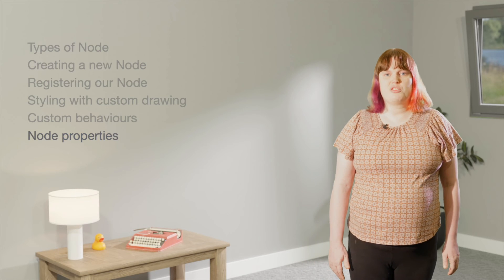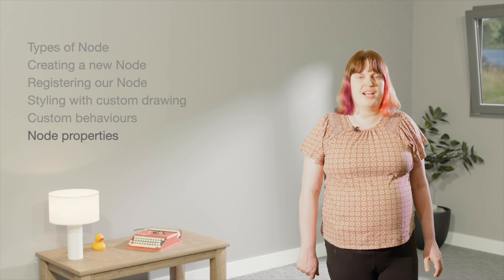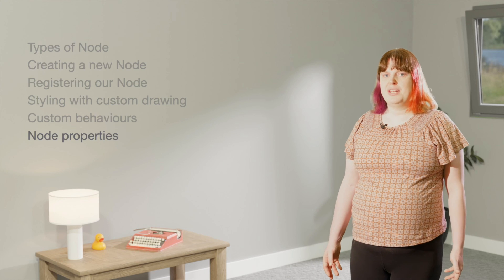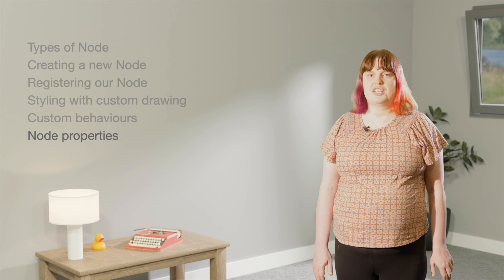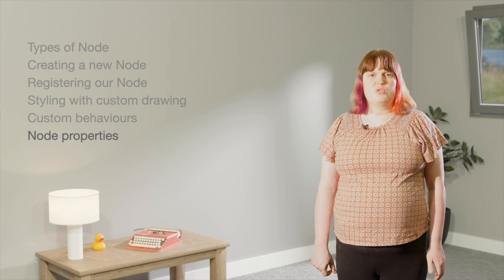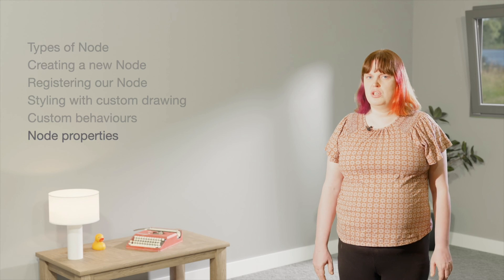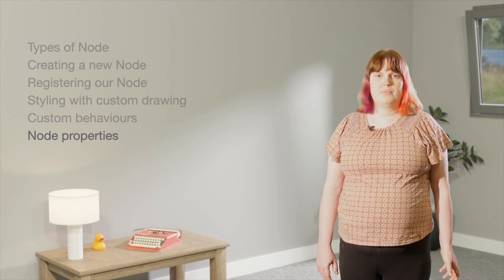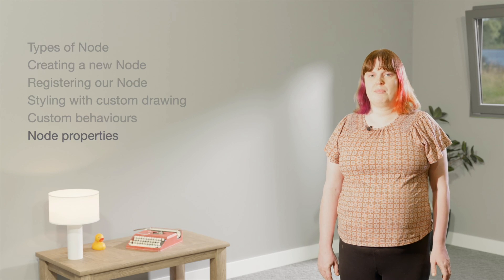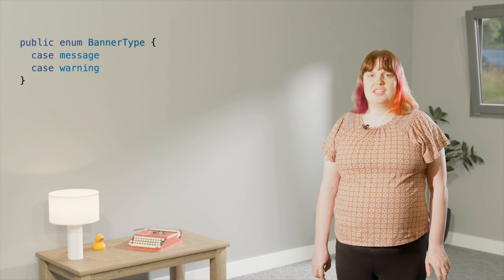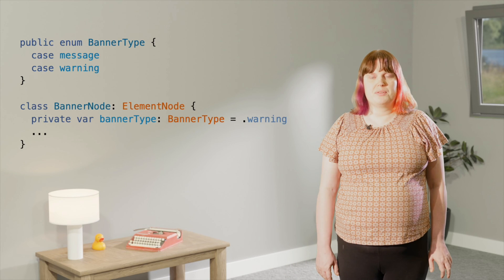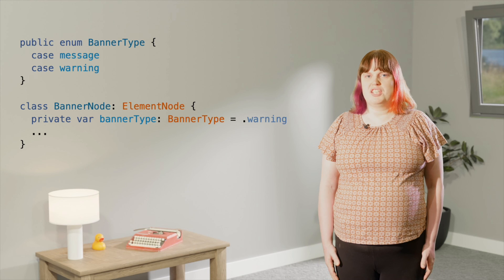There's one more concept I would like to introduce. I'm diverging from the Lexical React session a bit here, but I think it's good to mention this now. Let's talk about how you can add a property to your node, because there are a few gotchas here that it's important to know about. We're going to make our node able to render two kinds of banners: message and warning. We want the message banners to be in yellow, and the warning banners to be in red. First, we'll need an enum to list the different banner types. Now we need to add a property on our node.